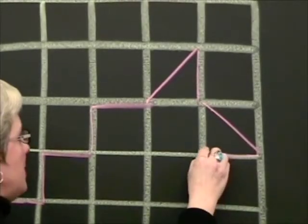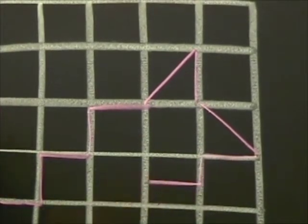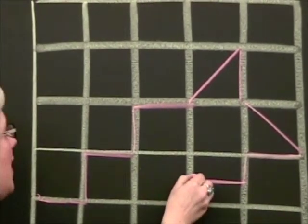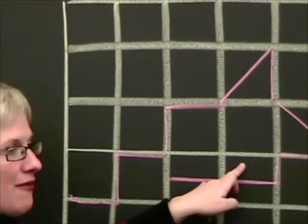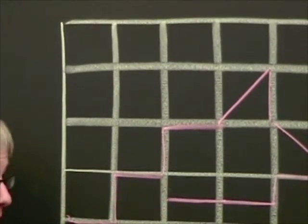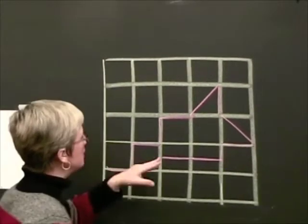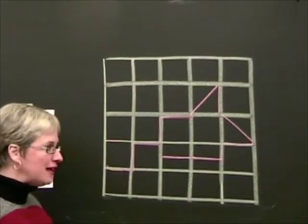I could also do a half a block that way and then another half a block that way and then these two half blocks together would be a whole block. So it's possible to create some rather funky figures.